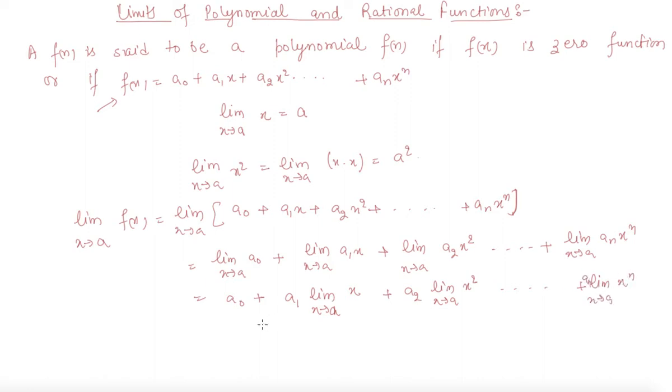From this we get a₀ plus a₁a plus a₂a² if you put the value of x equal to a, plus aₙ to the power n. This equals f(a), which means function of a.